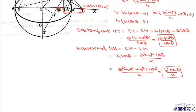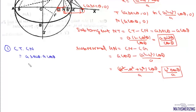Now there are some results we'll prove using sub-tangent and sub-normal. The first result is CT × CN = a². We know CT = a secθ and CN = a cosθ. Multiplying them gives a², so CT × CN = a², which equals CA².